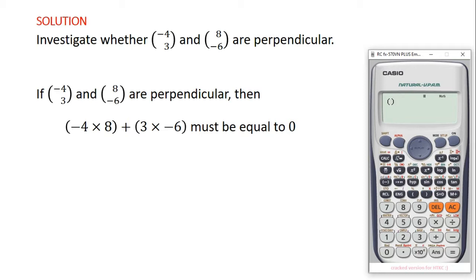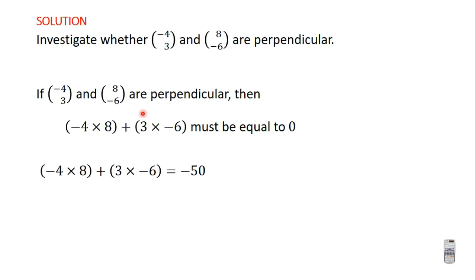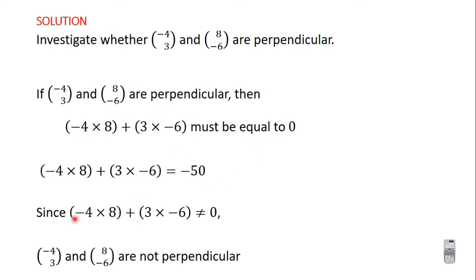So we are going to do that on our calculator. Minus 4 times 8, then plus 3 times minus 6. And we are getting minus 50. Since minus 4 times 8 plus 3 times minus 6 is not equal to 0, the two vectors are not perpendicular. Because if they were perpendicular, then minus 4 times 8 plus 3 times minus 6 must equal 0.